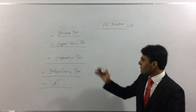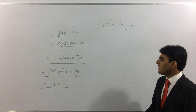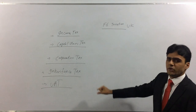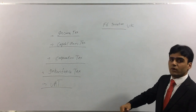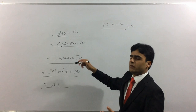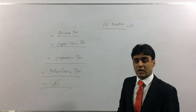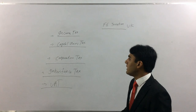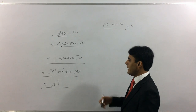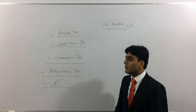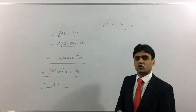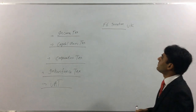So those are the five major topics in F6. There are also some additional topics not listed here, but these are the key ones. Please note that these are topics, not chapters — each topic contains several chapters. Income tax has around eight to ten chapters, corporation tax around eight, and capital gains tax, inheritance tax, and VAT each have a couple of chapters.